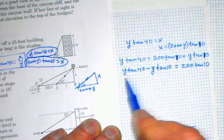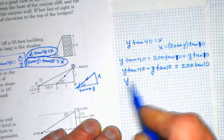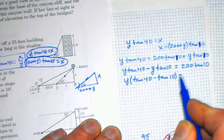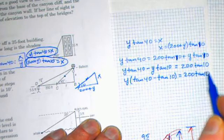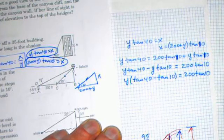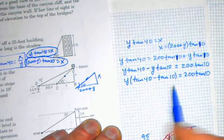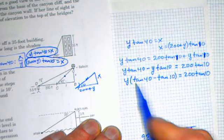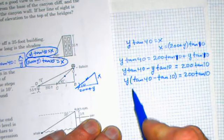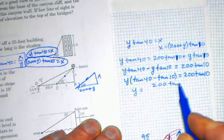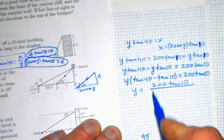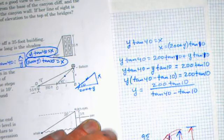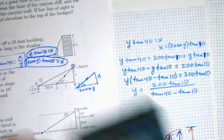Both of these have a y. So in fact, I can distribute the y out. So y times tan 40 minus tan 10 equals 200 tan 10. I want to solve for y. So I need to divide out this tan 40 minus tan 10. That's multiplied by the y on the left. And when I do that, I get y is equal to 200 tan 10 divided by tan 40 minus tan 10. So that's what we need to use the calculator on and see what number we get out of that.